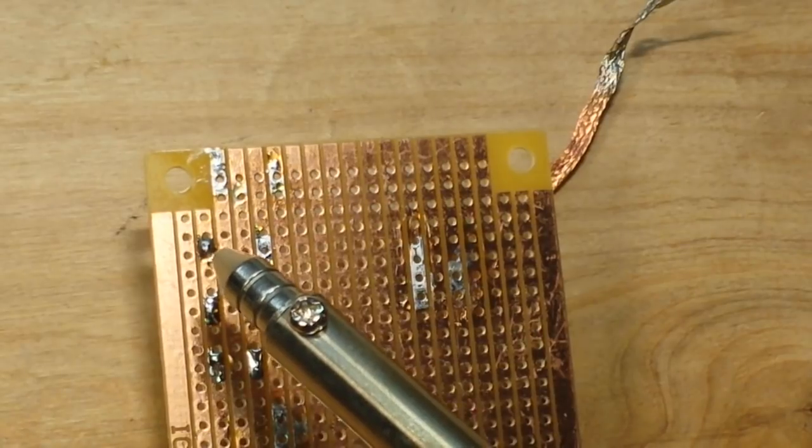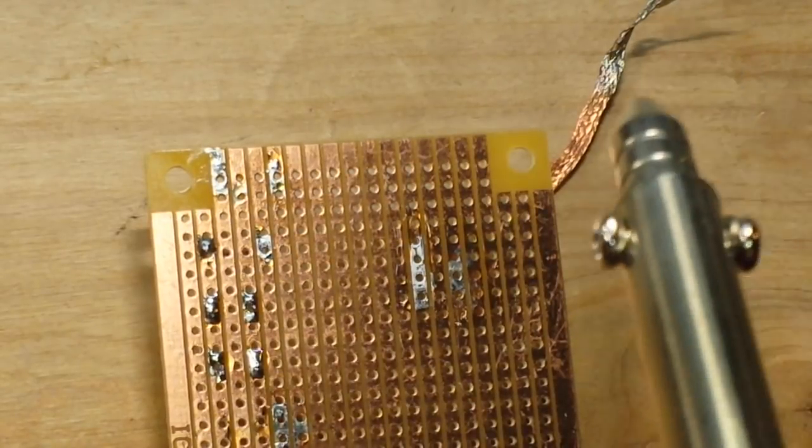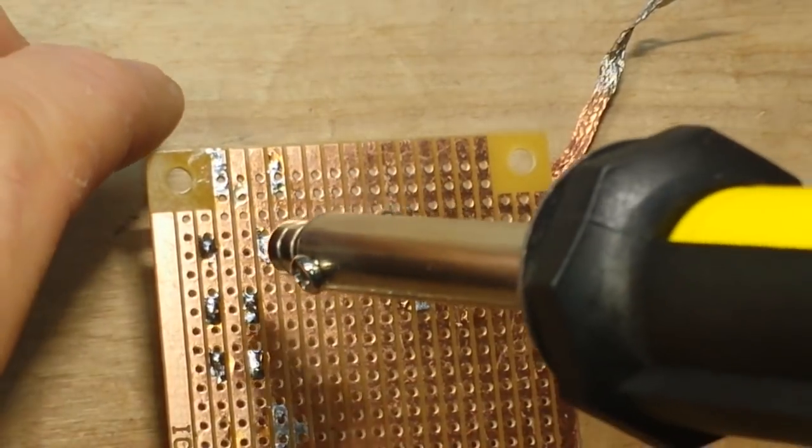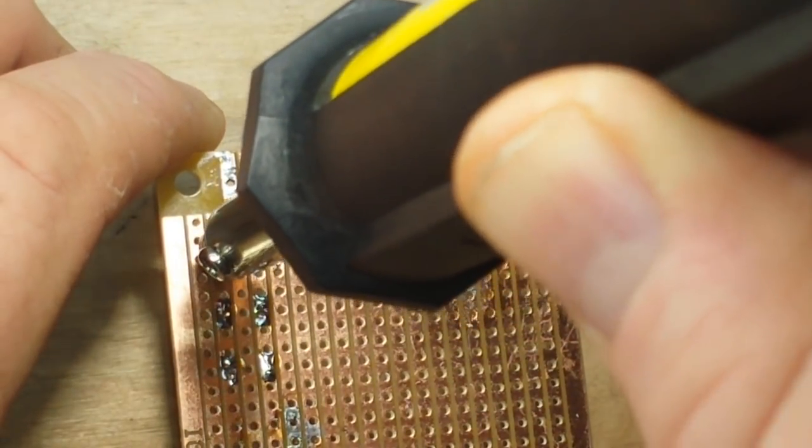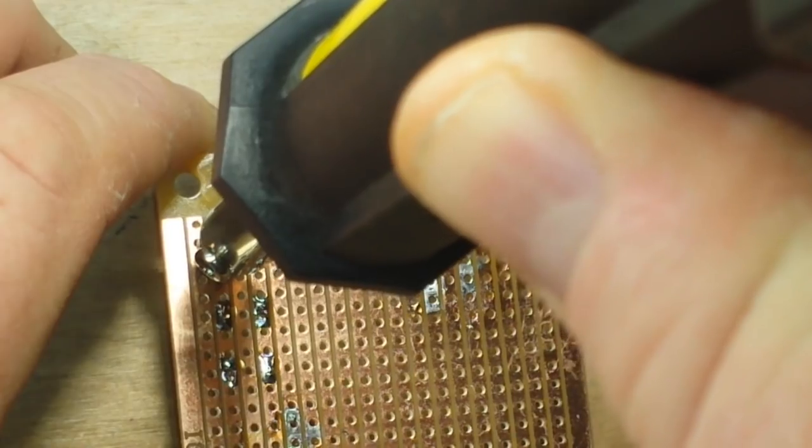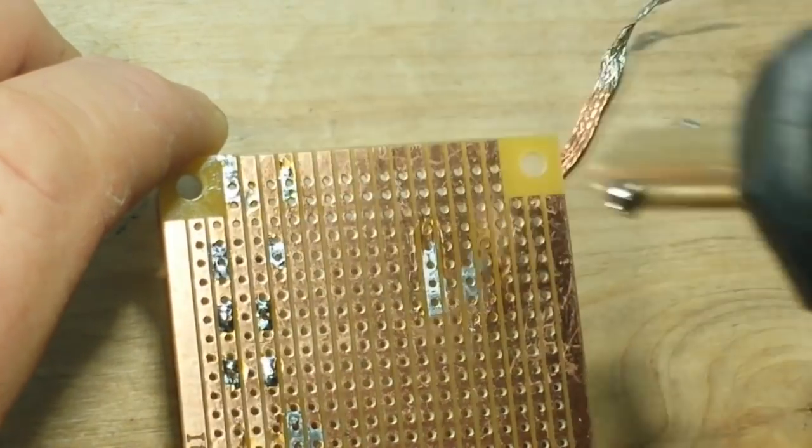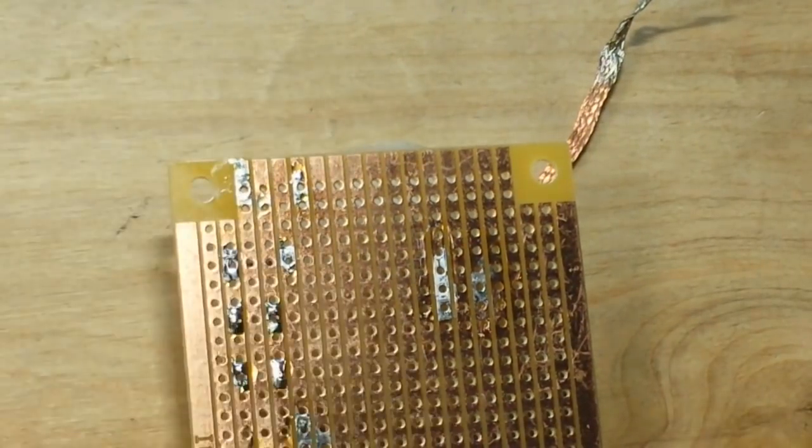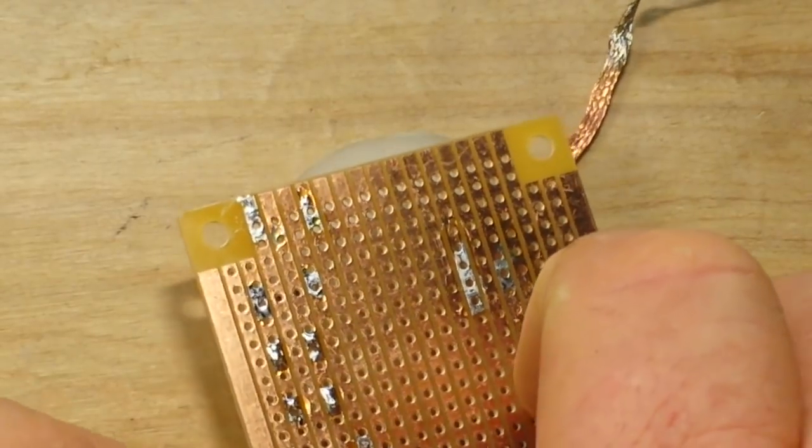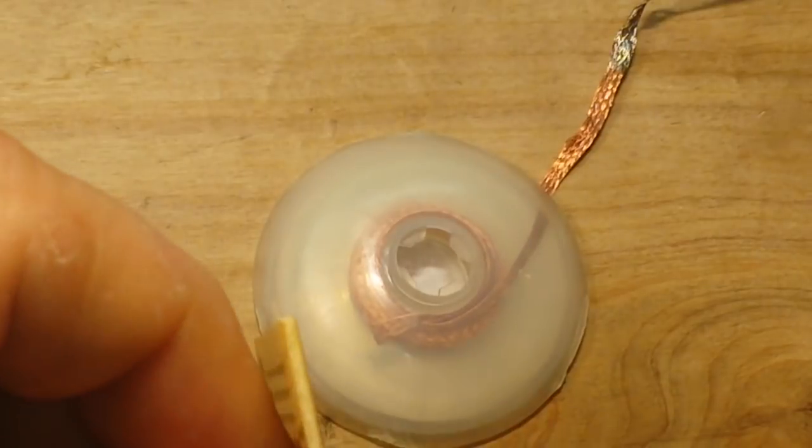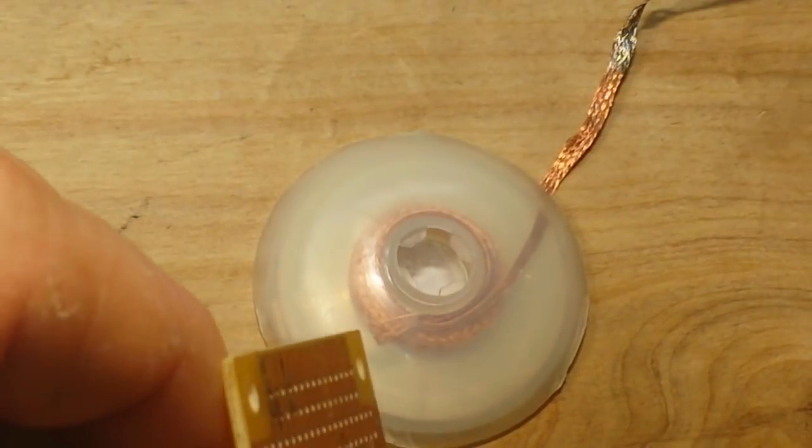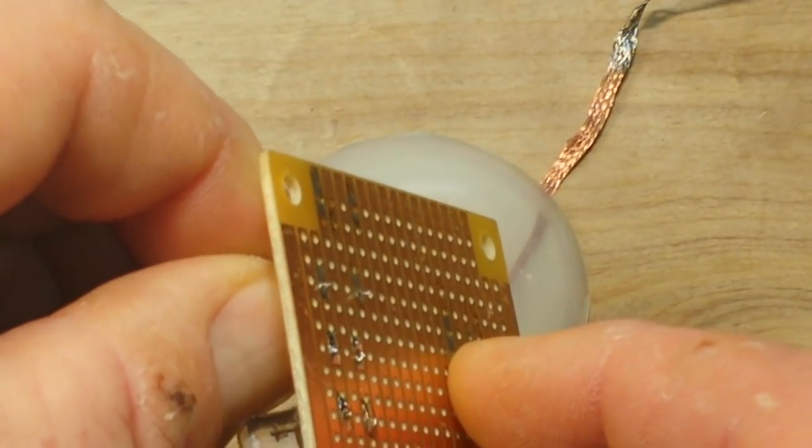Okay, we're going to desolder this one, you can see the little mound of solder right there. Just put that on there like that, let it sit for a couple seconds, press the button, and you can now get your component out. See how it's loose? And boom, out comes your component.